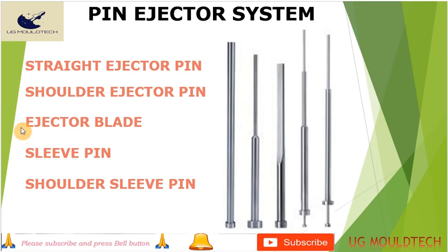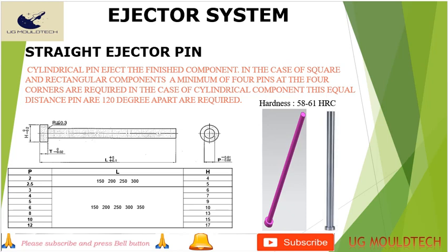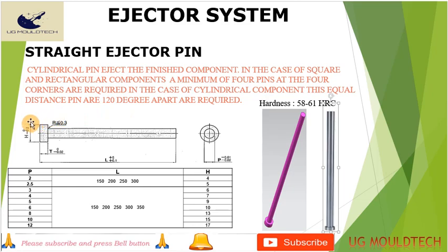Now we move on to what is a straight pin. The straight ejector pin is a cylindrical ejector component. In the case of square and rectangular components, a minimum of four pins are required at the four corners. For cylindrical components, a minimum of three pins at 120 degrees are used. This is the standard straight ejector pin, and we have various sizes — as the product increases, we can increase the diameter and length accordingly.